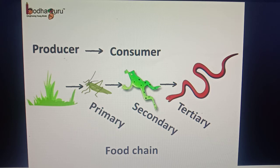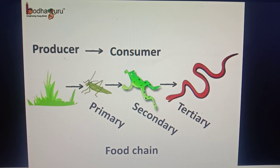Thus, the nutrients and the food produced by plants circulates in all the animals through a chain-like system. Hence, it is called the food chain. In the food chain, each member becomes the food of the next member. Like in this food chain, the frog is the food of the snake.